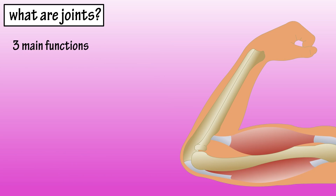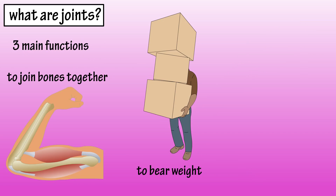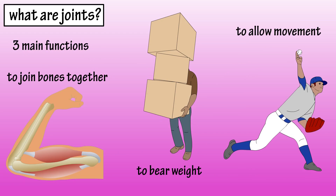Joints have three main functions: to join bones together, to bear weight, and to allow the body to move. There are many different ways to classify joints, and in this video we're going to divide them into three groups: fibrous, cartilaginous, and synovial.